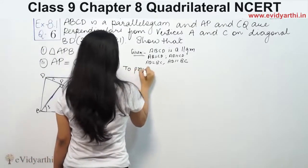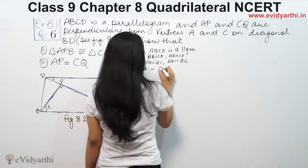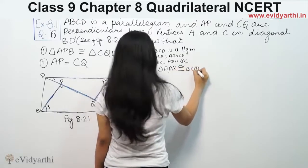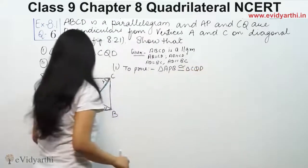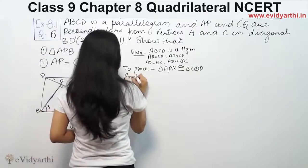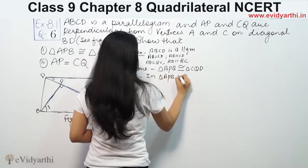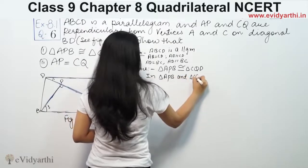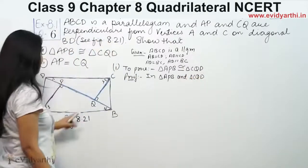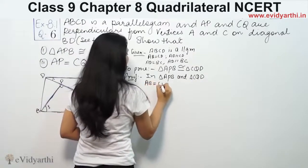We have to prove that triangle APB is congruent to triangle CQD. In the two triangles APB and CQD, AB is equal to CD — we have given it.